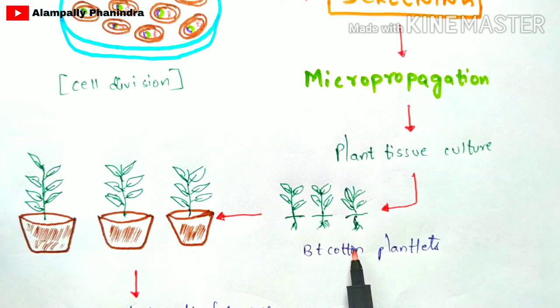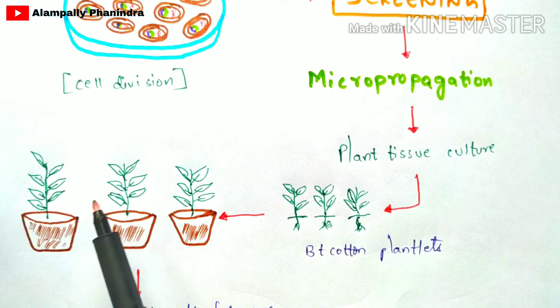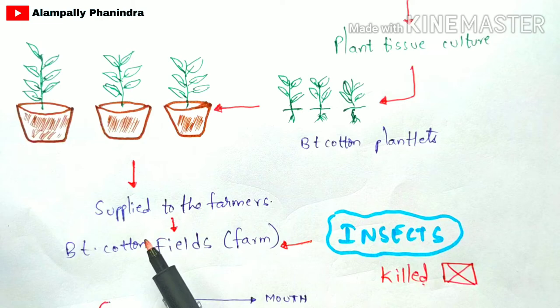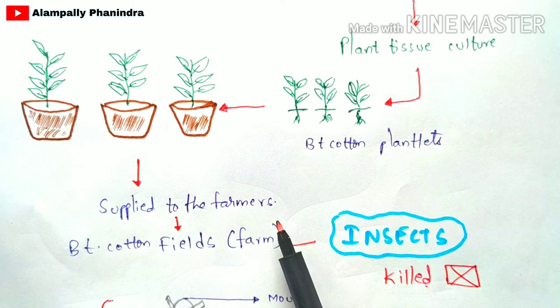Scientists cultivate these BT cotton plantlets in pots, neatly pack them, and supply them to farmers. The farmers then take these plants and cultivate the BT cotton throughout their farm fields.